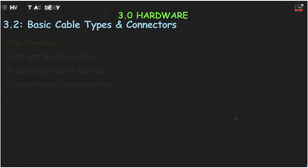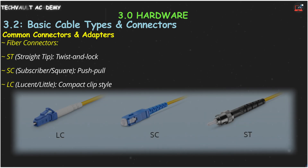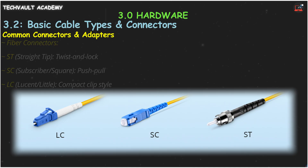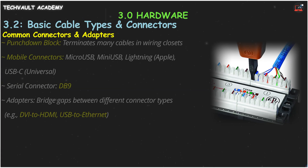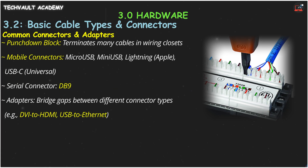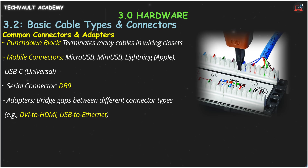For fiber optics, you have the twist-and-lock ST connector, the push-pull square SC connector, and the compact clip-style LC connector. A punch-down block is used in wiring closets to terminate many cables neatly, without putting a connector on every single wire.